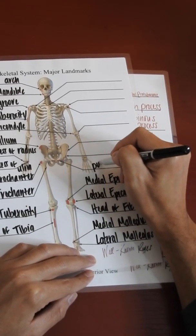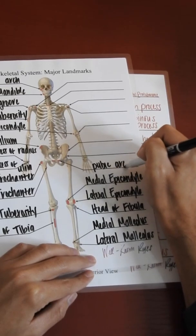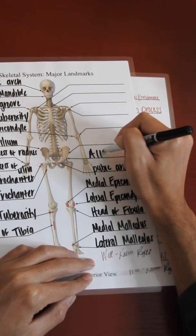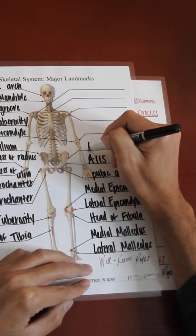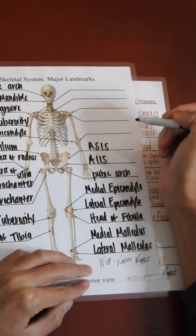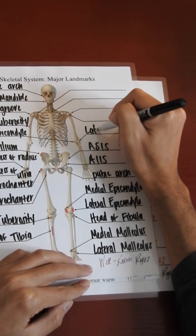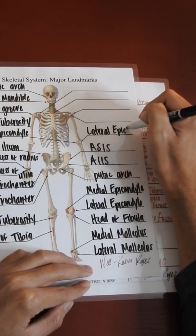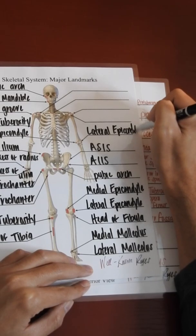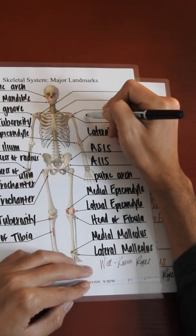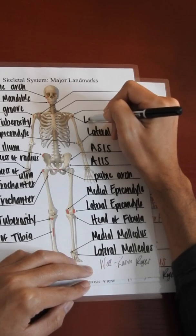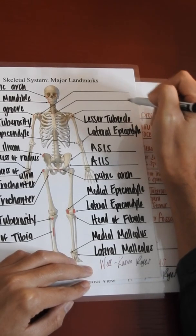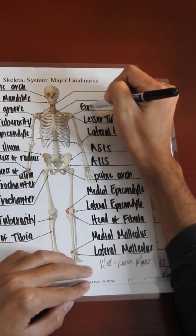The pubic arch, the anterior inferior iliac spine and the anterior superior iliac spine, the lateral epicondyle of the humerus, the lesser tubercle, and the greater tubercle.